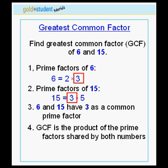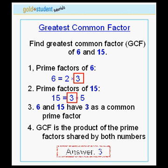The greatest common factor is the product of the prime factors shared by both numbers. Because 6 and 15 only share the number 3, the answer to the problem is the number 3.